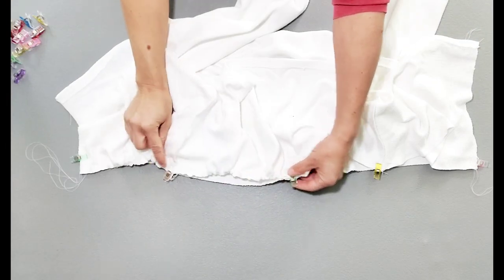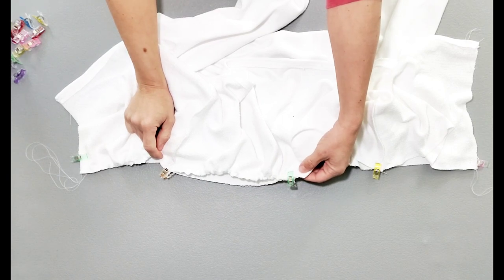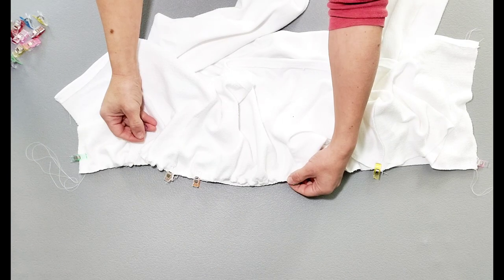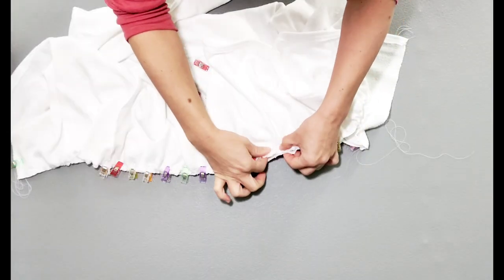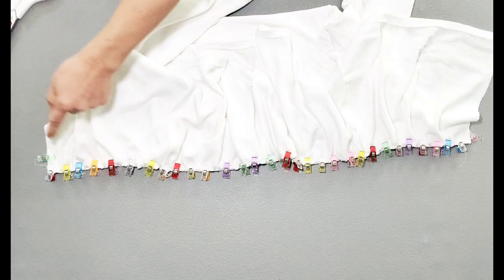Adjust your gathers from clip to clip to make sure they're evenly spaced. And clip the entire seam. Now take it to your machine and sew or serge.